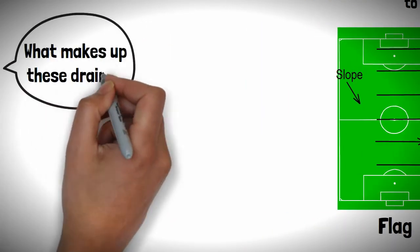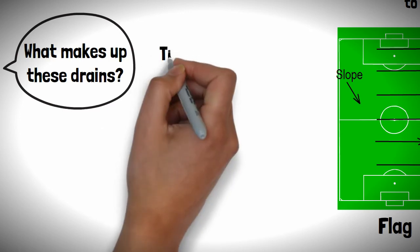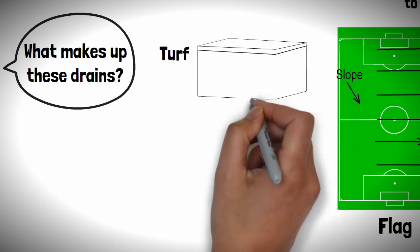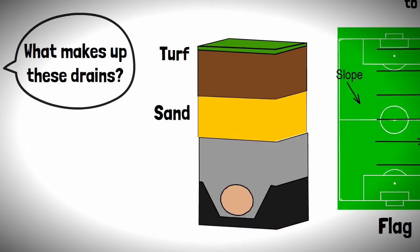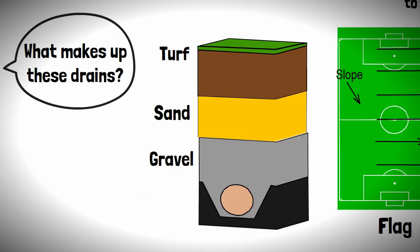What makes up these drains you may ask? Well, these drains will be the turf or topsoil sitting on top, disguising all the magic which happens beneath. Below this, we will have a layer of sand and then gravel, which allows the water to filter through easily and once it gets to the bottom of the gravel, it will get picked up by a perforated pipe.